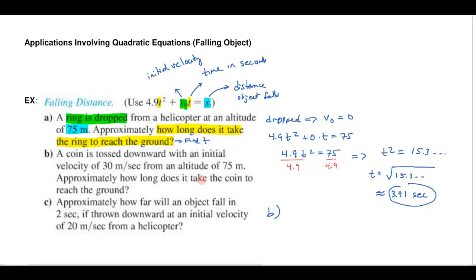Now in part B, part B says a coin is tossed downward with an initial velocity of 30 meters per second. So in this case now I have an initial velocity, so if it's tossed downward and it has an initial velocity so now I know my V₀ is going to be 30 and it's from the same altitude so I just plug it into the same formula. I got 4.9t² but this time I've got a 30t, that's my initial velocity and I want to know where that's going to equal the 75 meters that it's going to have to fall.